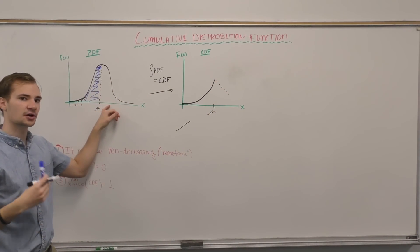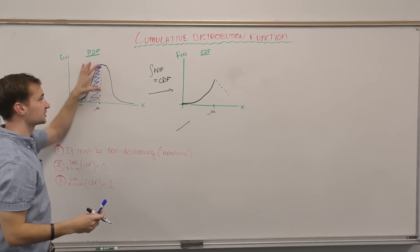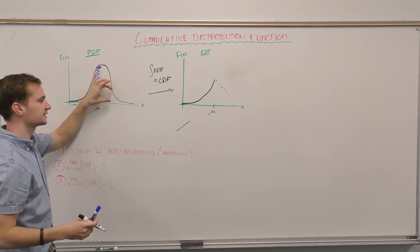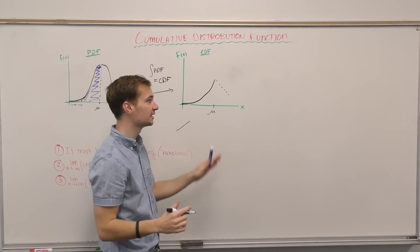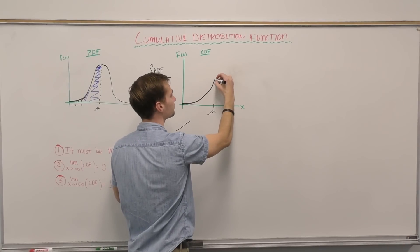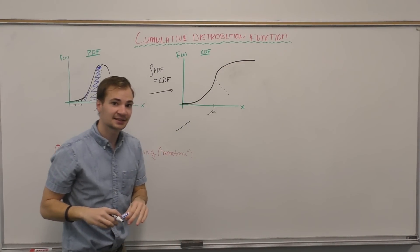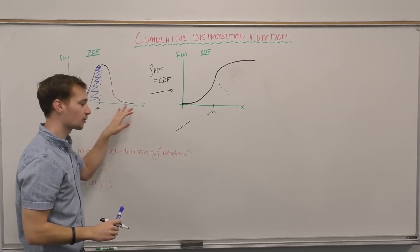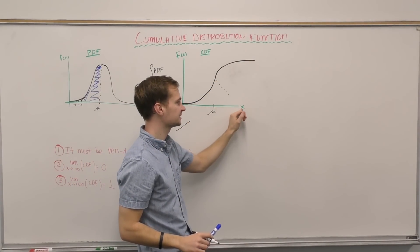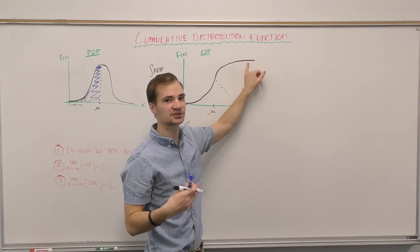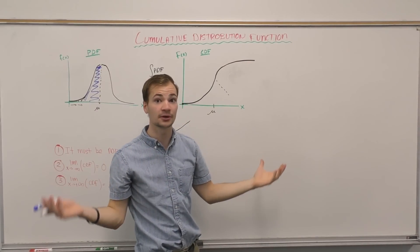But our area slows down, right? We're still adding a lot, but we're adding less and less and less each time. And because we're adding less and less and less, my slope is going to decrease. And we add less and less and less until we're adding almost zero. And that's why this begins to taper off, because as x comes along, I'm adding so little that it's no longer increasing.